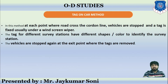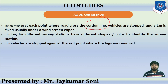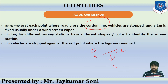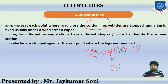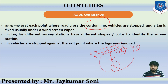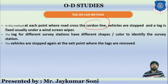Then comes the last method — the tag on car method — in which the particular area is cordoned and vehicles are stopped. This is the entrance, these are the exits. The car is moving and a tag will be marked on it at the entrance. Now, if the car goes from this place to exit one, that person will remove the tag and note the entry. If it goes from this place to exit two, that person will mark the particular tag. So there will be data showing which route people used and how much time was taken.